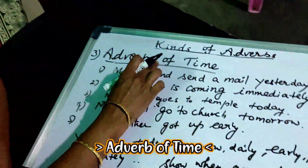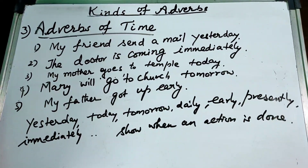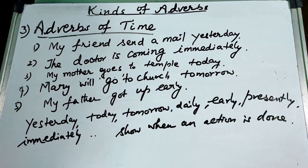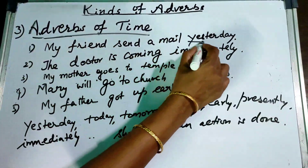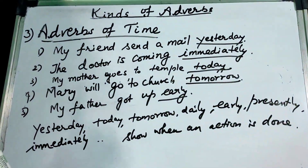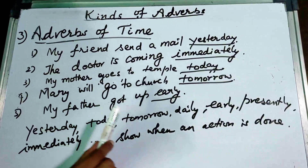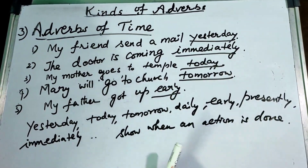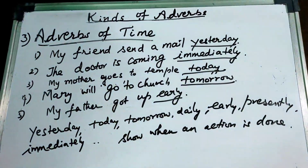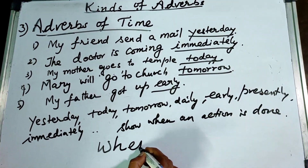The next kind is adverb of time. Look at these examples: 'My friend sent a mail yesterday,' 'The doctor is coming immediately,' 'My mother goes to temple today,' 'Mary will go to church tomorrow,' 'My father got up early.' The words 'yesterday,' 'immediately,' 'today,' 'tomorrow,' and 'early' are all adverbs of time — they show when an action is done.